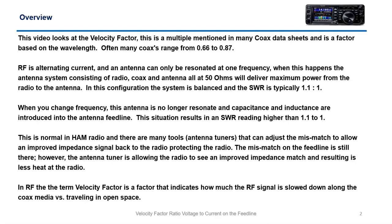What we're looking at is Velocity Factor, and essentially this is a multiplier that's mentioned in many of the data sheets. This multiplier can be anywhere from 0.66 to 0.87, which are the typical ranges I have seen.